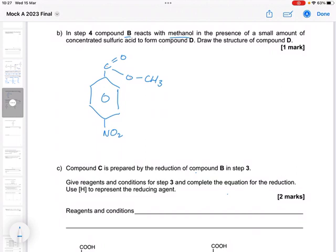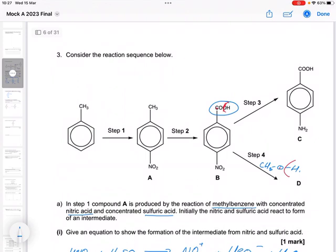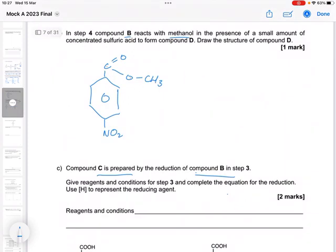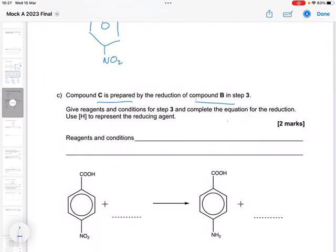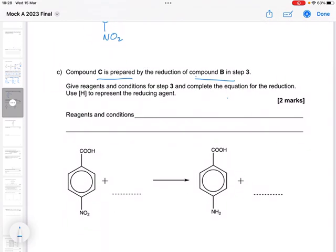Compound C is prepared by the reduction of B. So let's go back and have a look. So compound C, by the reduction, so it is now this that is being reduced. Give the reagents and conditions for step three and complete the equation for the reaction. So here, the reagents and conditions is tin and concentrated hydrochloric acid. So I need both of those for the one mark there.